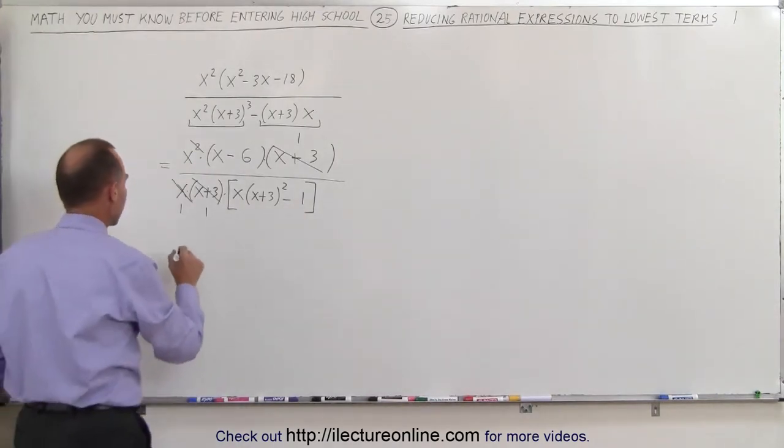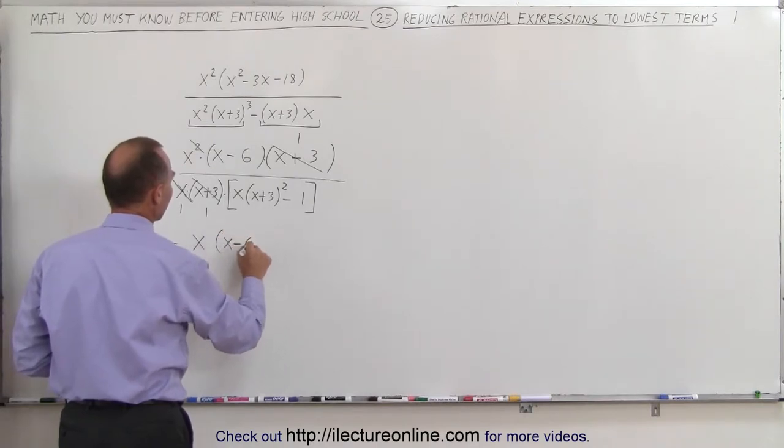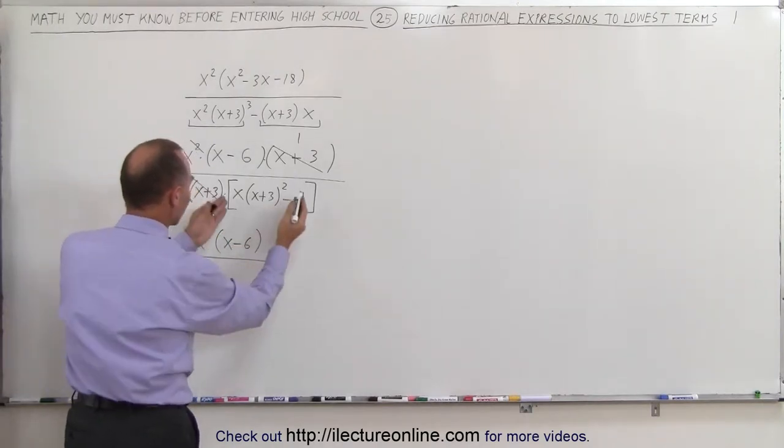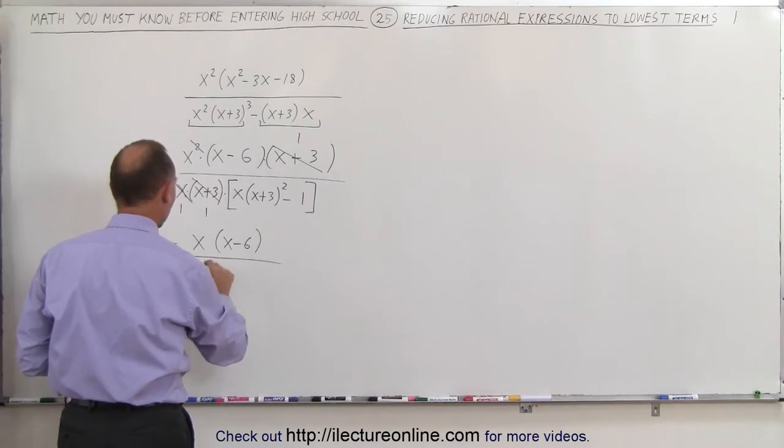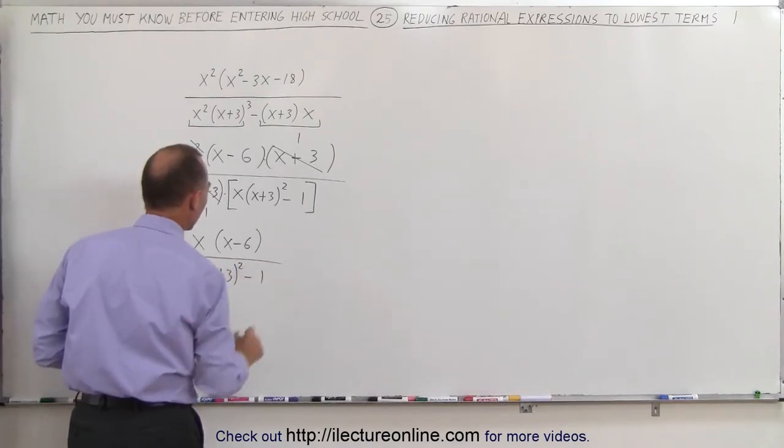So when I do that, I have the following remaining. I end up with an x times an x minus 6 in the numerator, and in the denominator I end up with what's over here, which is an x times an x plus 3 quantity squared minus 1.